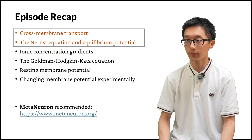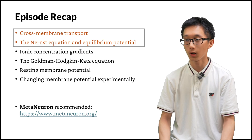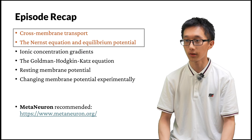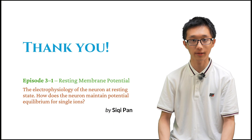In this episode, we talked about the different proteins useful in cross-membrane transport, especially ion channels and ion pumps. Then we deduced the Nernst equation and learned to calculate the equilibrium potential. In the next episode, we'll first talk about the concentration gradients of specific ions, then examine the multi-ion case of the Nernst equation — called the Goldman-Hodgkin-Katz equation — and finally deduce the total resting membrane potential and discuss how to change the membrane potential experimentally. That's all for this episode. See you again!